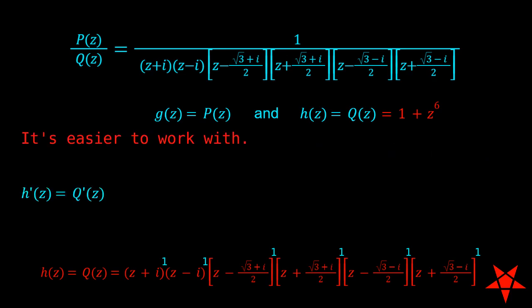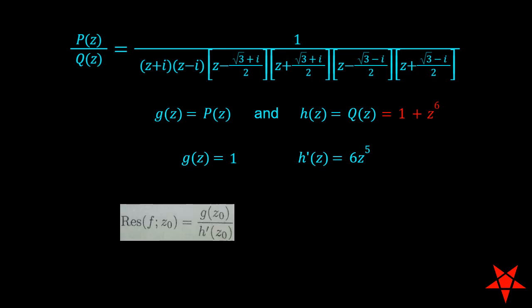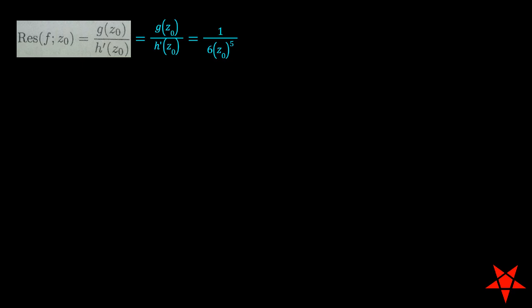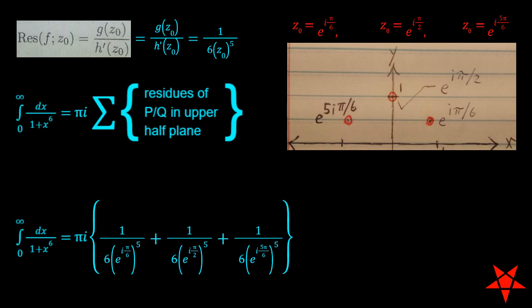Utilizing the original form of q of z we find that h prime of z works out to 6z to the fifth plus nothing. 6z to the fifth fits nicely into the denominator of the residue formula in proposition 412 and now we just need to crunch out the three residues that we care about before summing them. The algebra can get a little messy here depending upon how you attack the problem. I do not recommend looking for a common denominator for the three terms.